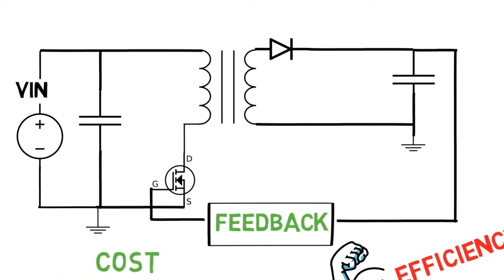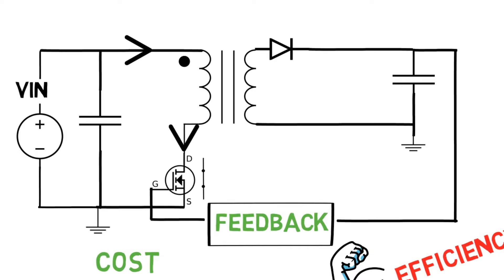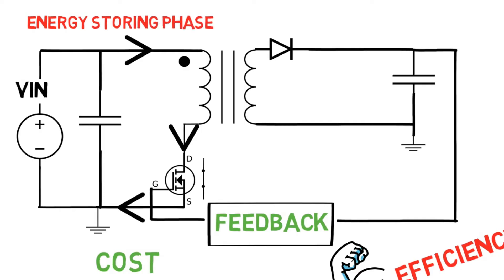For a better understanding, we split the converter's operation into two parts: first when the MOSFET is turned on, and when it is turned off. When the MOSFET is turned on, the primary side of the transformer acts like an inductor and starts storing energy coming from the input. Hence, at this time there will not be any voltage at the output side. This is known as the energy storing phase in the flyback converter.